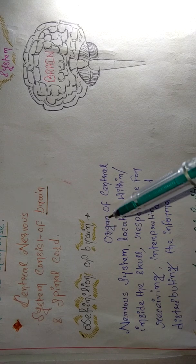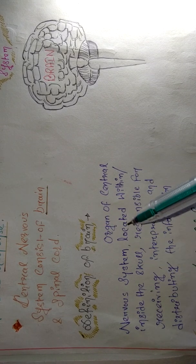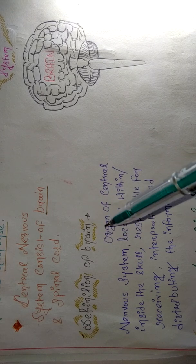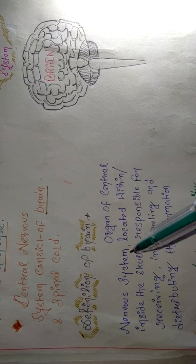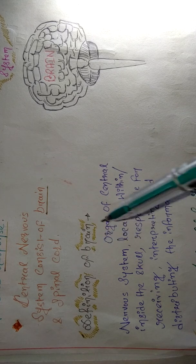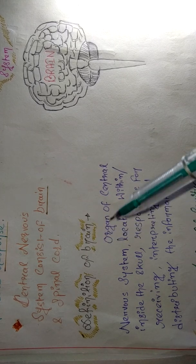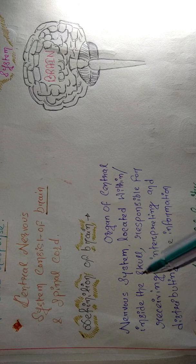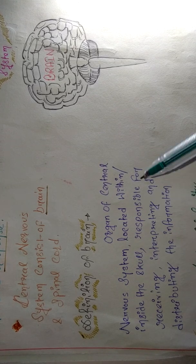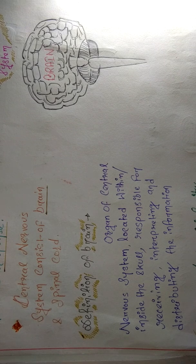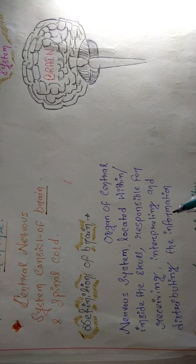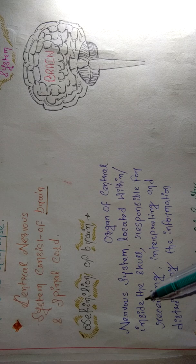Definition: the brain is an organ of the central nervous system located within the skull — skull means our head, inside our skull.